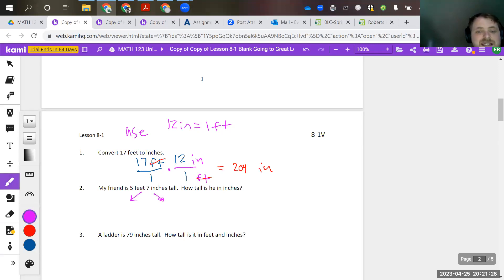You want to kind of deal with five feet, and then you want to separately deal with seven inches. So when it asks how tall is the inches, I've already got seven inches accounted for, so I'm just going to leave this alone.